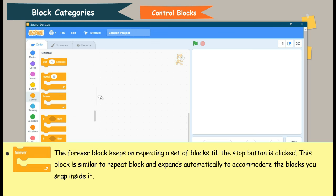The forever block keeps on repeating a set of blocks till the stop button is clicked. This block is similar to repeat block and expands automatically to accommodate the blocks you snap inside it.